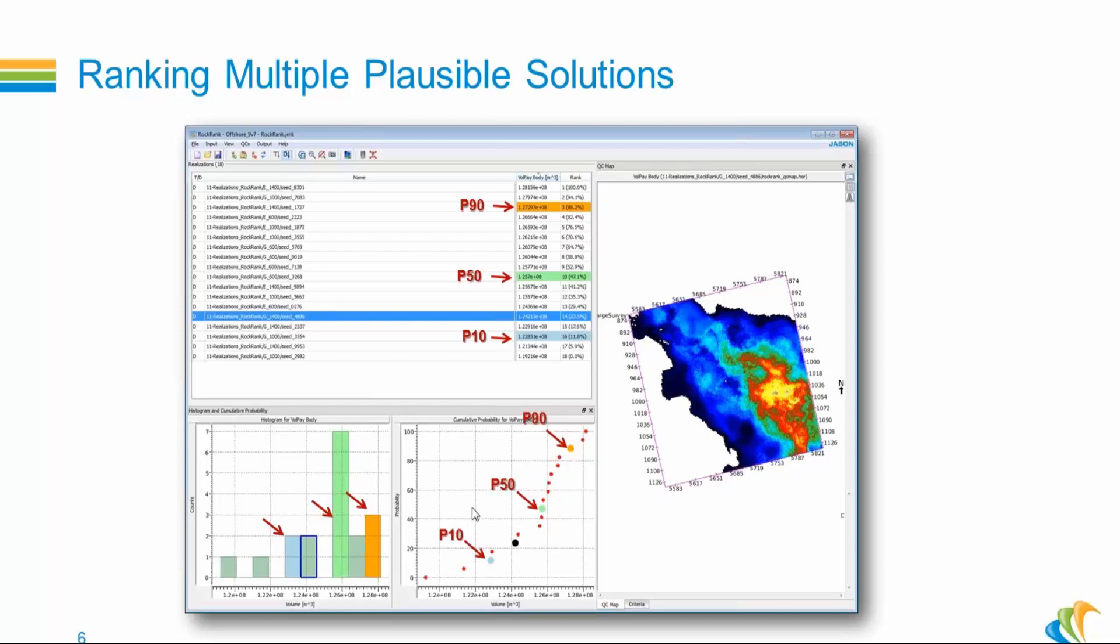The same ranking can be used in production objectives to select the model. In that case, you are going to select the P50 as the best case scenario, and you want a realization that exemplifies the worst case, that would be the P10, and a realization that exemplifies the best case, that would be the P90. Again, a very simple process. The critical part is to determine what to use as a ranking criterion.